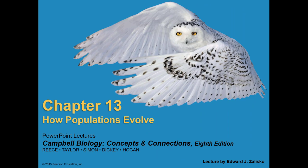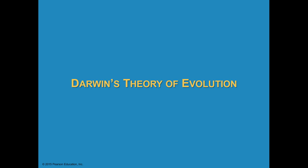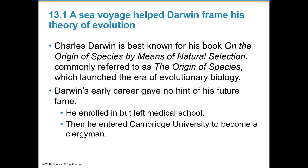Chapter 13: How Populations Evolve — this is the beginning of Biology 2. The big ideas for this chapter are Darwin's theory of evolution, the evolution of populations, and the mechanisms of microevolution. Charles Darwin is best known for the book he wrote, On the Origin of Species by Means of Natural Selection, commonly referred to as just The Origin of Species. This launched the era of evolutionary biology.